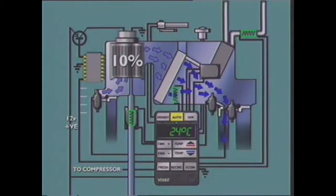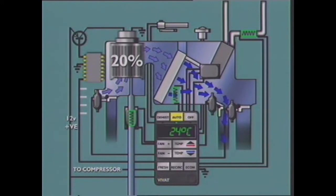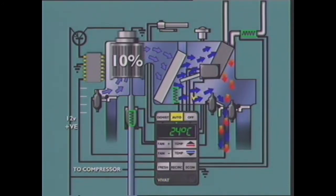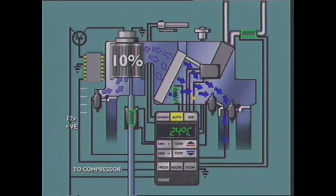The electronic control unit also controls the speed of the interior ventilation fan, which is infinitely variable between a stopped condition and the fan's maximum speed. Some actuators provide a feedback signal to the electronic control unit in the form of a voltage signal, used by the ECU to determine what position the actuators are in and whether or not they are moving.